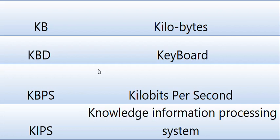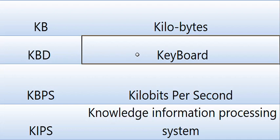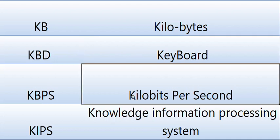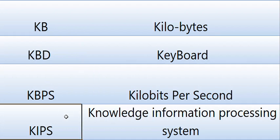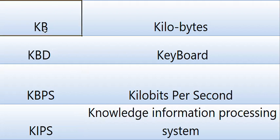Hello friends. In this video we are going to show you some important computer forms which start with the letter K. KB means kilobyte, KBD means keyboard, KBPS means kilobits per second, and KIPS means knowledge information processing system. These four words are very important.